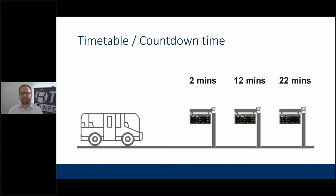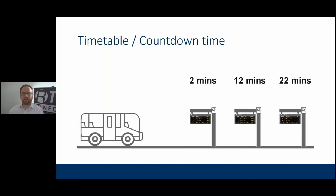In reality it's going to be much more complex, but if we assume perfect conditions — the timetable is perfect, it really does take 10 minutes to get from one bus stop to the next, there's no congestion, no passengers taking longer than expected to board, none of the real-world operational challenges — then actually the timetable is all that's needed, and you can just present the timetable as a countdown time. However, we know that in reality that is not going to happen, so how do we get a bit more clever?